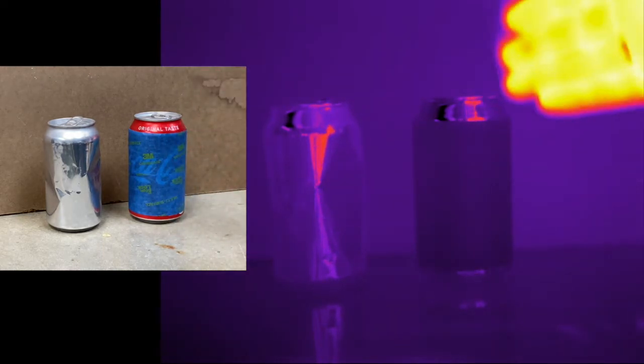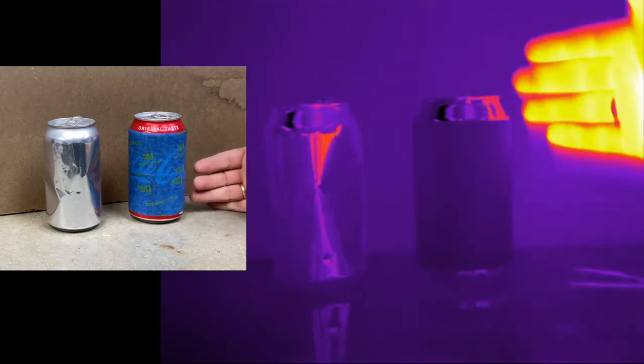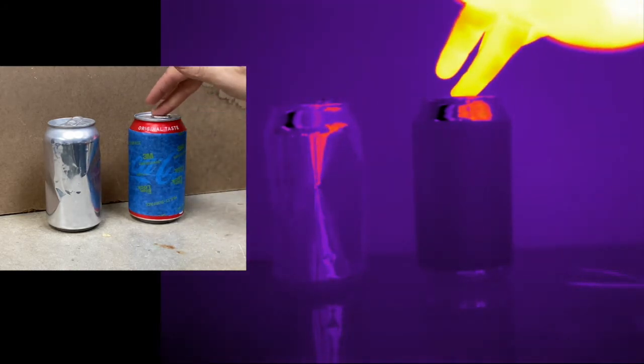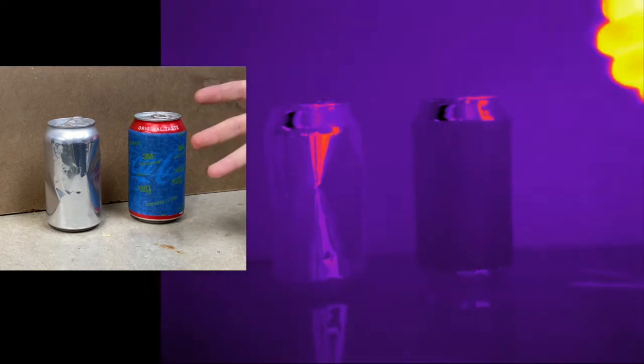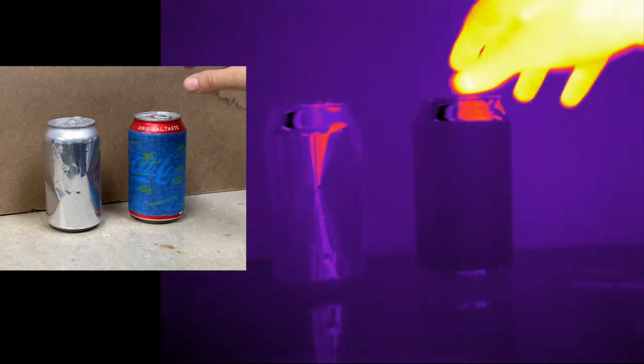So this shows you what emissivity is, and that's that when we try to measure the temperature of an object, there are two things: it's giving off infrared radiation and reflecting infrared radiation. If it reflects too much, you can't actually measure its temperature.